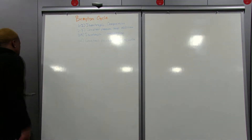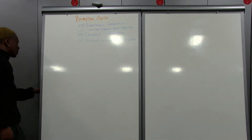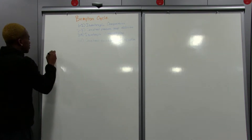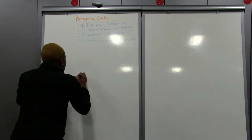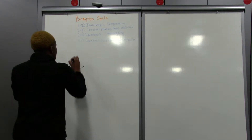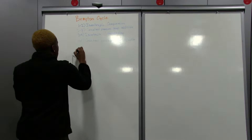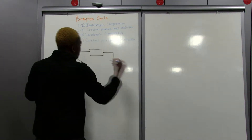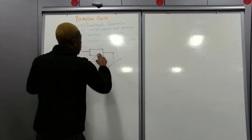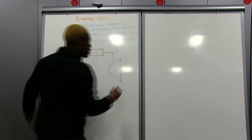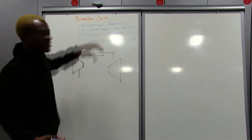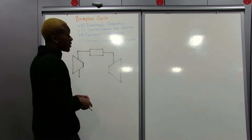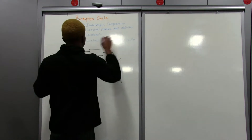Let me draw the diagram of what this looks like. For our isentropic compression we use an isentropic compressor — isentropic means entropy is the same at the beginning and end. Then we have something called a boiler, which is basically where the constant pressure heat addition process takes place. Then we have an isentropic expansion.